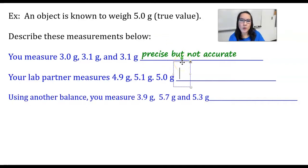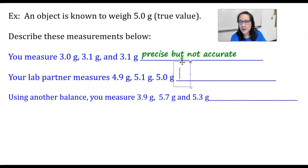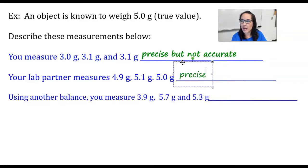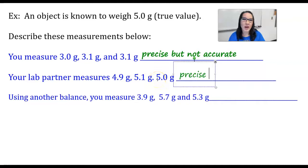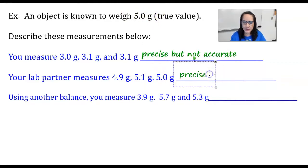Your lab partner measures 4.9, 5.1, and 5.0 grams. Each of these measurements are very close to one another, so we'll call that precise. And if you took the average of these, it averages exactly 5.0, which is our true value. So this is precise and accurate.